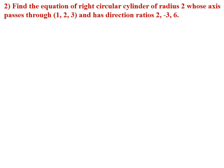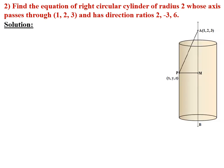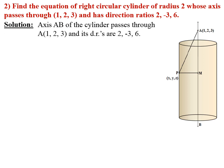Example 2: Find the equation of RCC of radius 2 whose axis passes through (1, 2, 3) and has direction ratios 2, −3, 6. Solution: The fixed point A on the axis is (1, 2, 3) and direction ratios are 2, −3, 6. Dividing by √(4 + 9 + 36) = 7, the direction cosines of the axis are 2/7, −3/7, 6/7.